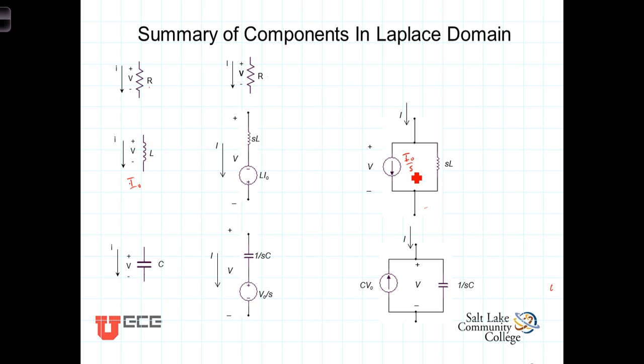And finally, the capacitor with its initial voltage can be represented in either a series representation with the impedance 1 over SC and a voltage source V0 over S.